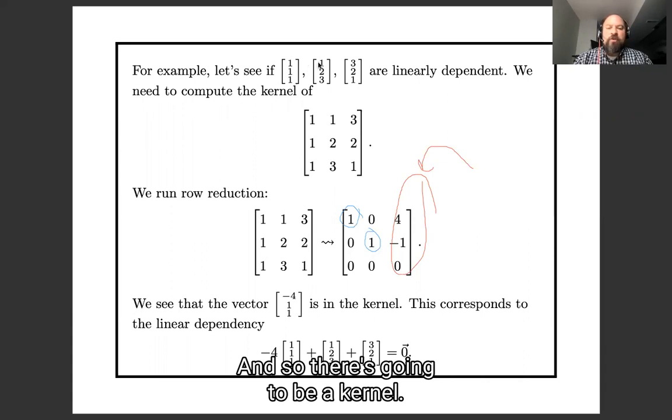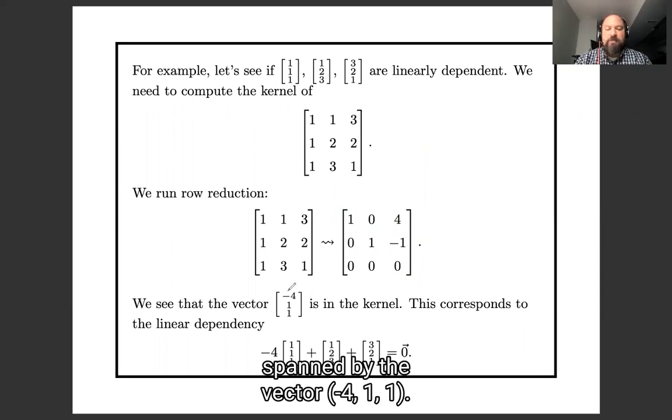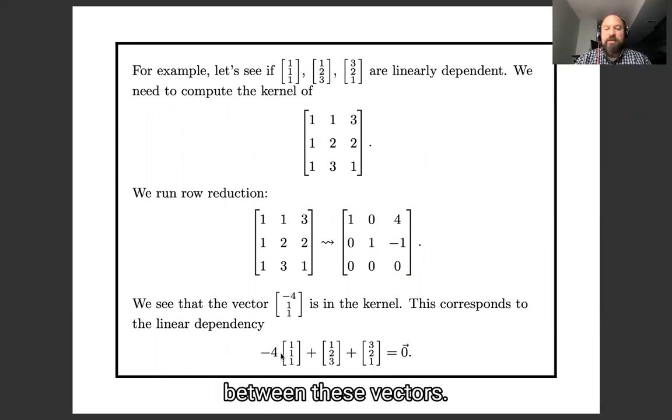So there's the free column. And so there's going to be a kernel. And we compute the kernel is spanned by the vector (-4, 1, 1). And sure enough, we have a linear dependency between these vectors. Negative 4 times the first vector, plus 1 times the second vector, plus 1 times the third vector, is 0.